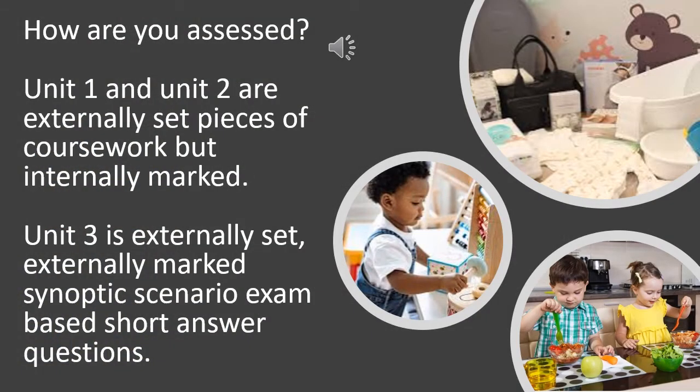So how will you be assessed in the Technical Award in Child Development and Care? Over your three units, Unit 1 and Unit 2 will be an externally assessed piece of coursework decided by the exam board. That coursework will be done over a set period of time in lessons and will be internally marked by teachers within the school. Unit 3, however, is an externally assessed and externally set synoptic scenario examination, with short answer questions based on the whole of the three units.